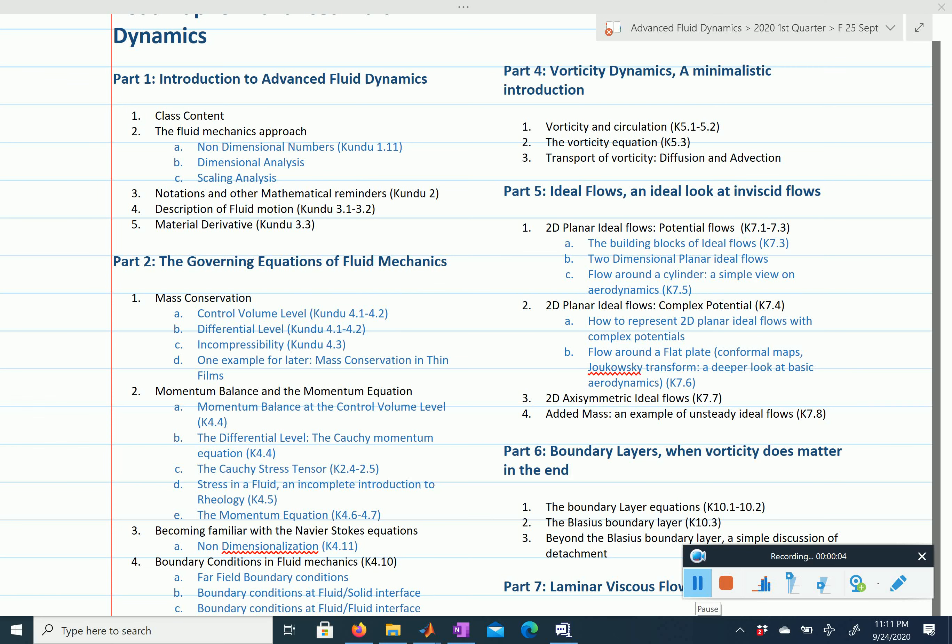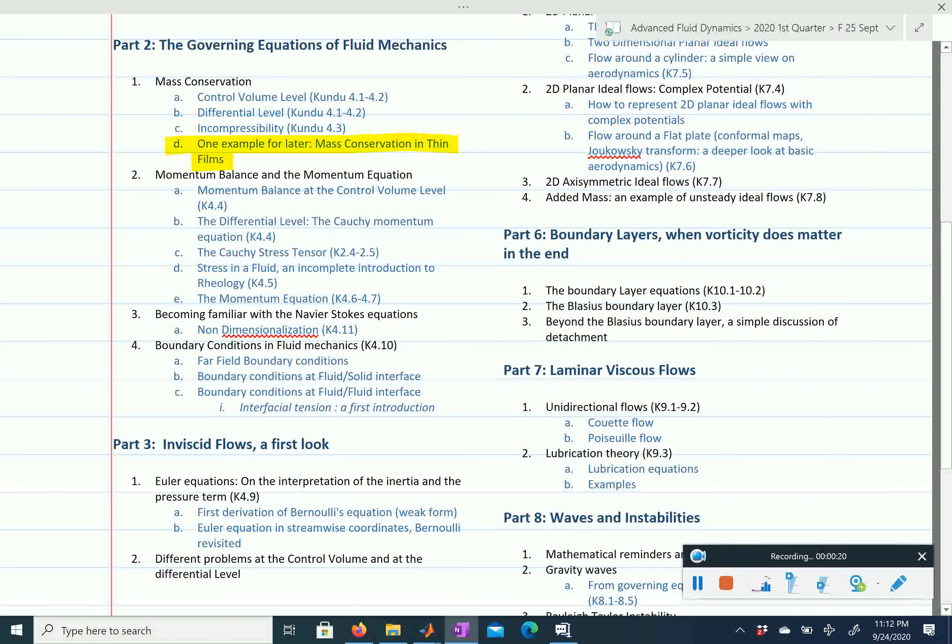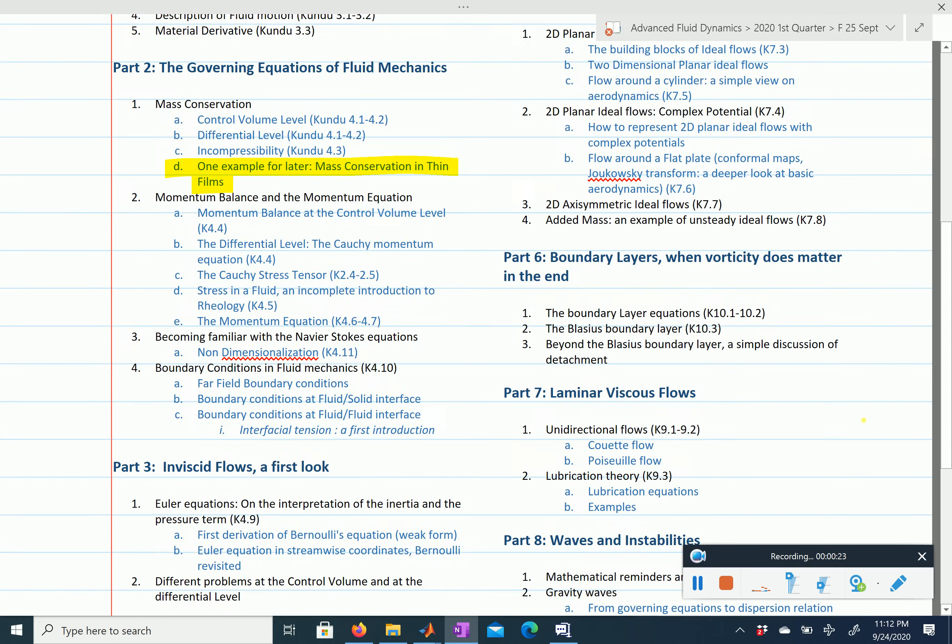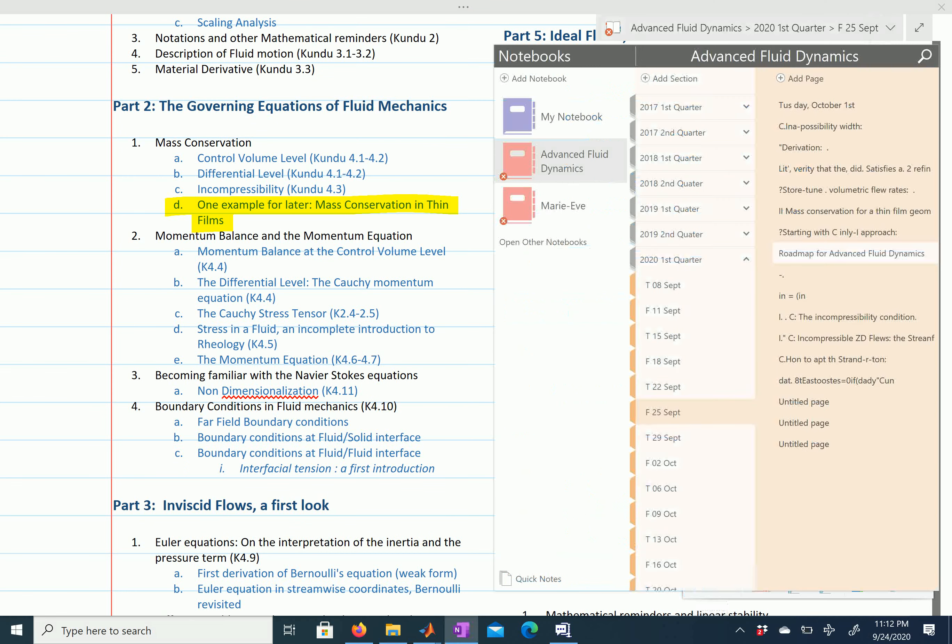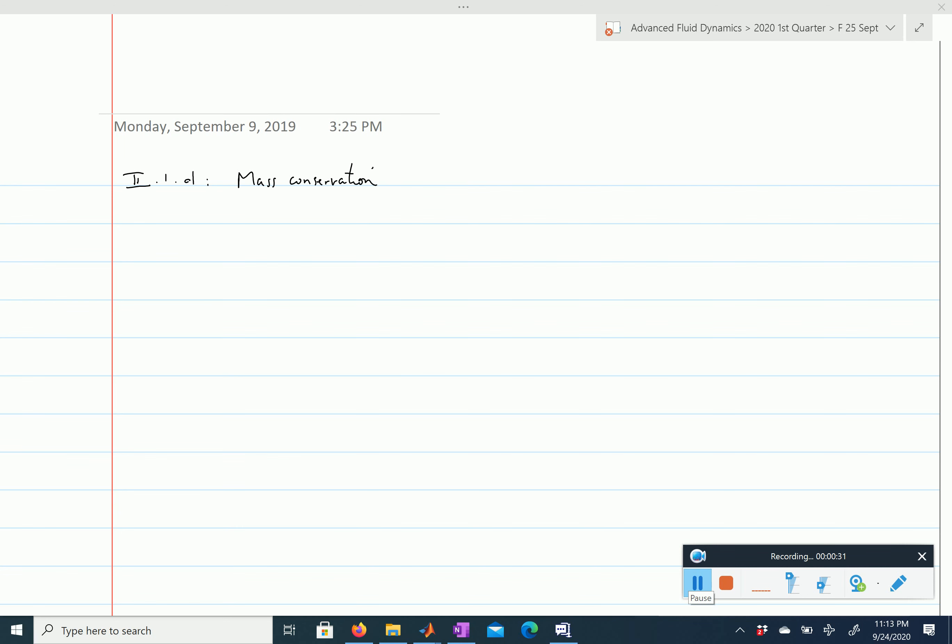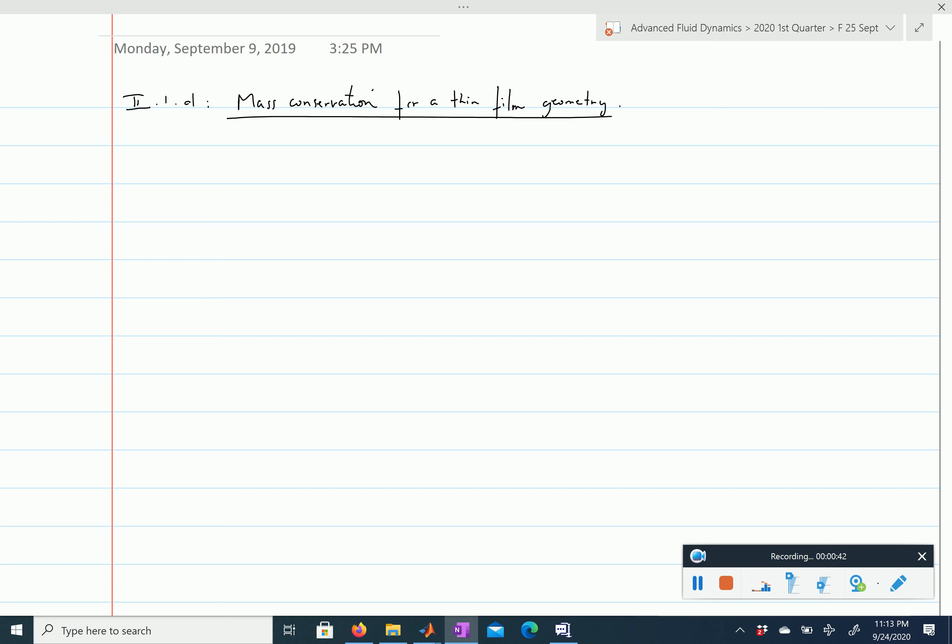Here we discuss one final formulation of mass conservation in a particular geometry: mass conservation in thin films, which we will use when we look at lubrication theory. So let's consider a 2D thin film.